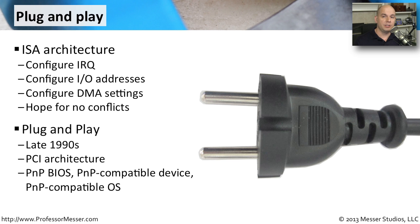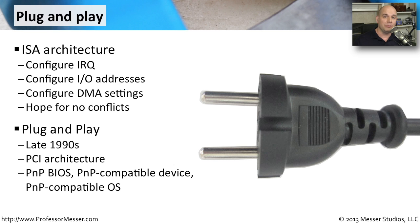That's why plug and play was introduced, along with a brand new architecture called the PCI architecture. This came out in the late 1990s, and at the time you needed three things: a BIOS that supported plug and play, an adapter card or device that understood the plug and play format, and an operating system that could take advantage of that automation. Back then, those three things were sometimes hard to find. But on today's modern computers, it's hard to find a BIOS or device that does not support plug and play — it's almost assumed that everything will be plug and play compliant.